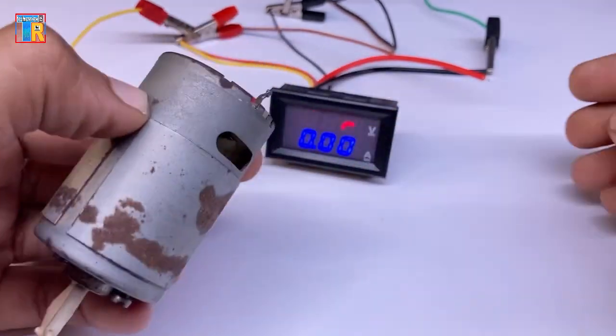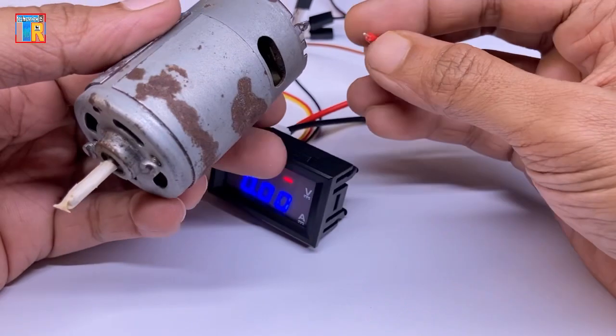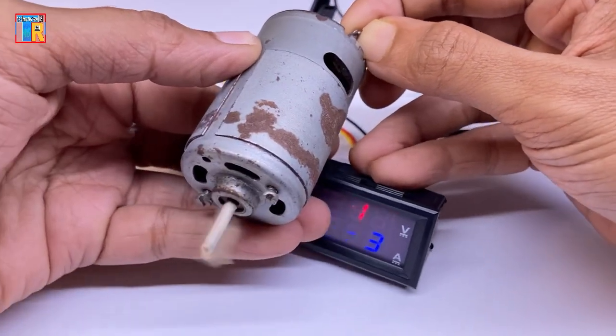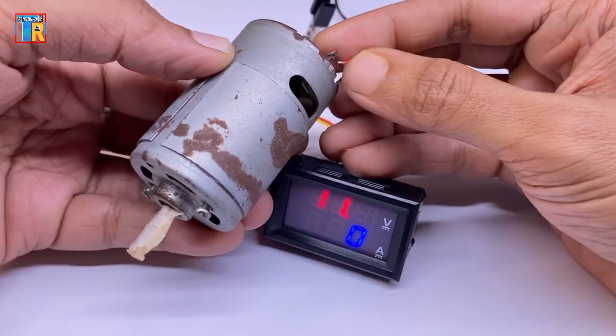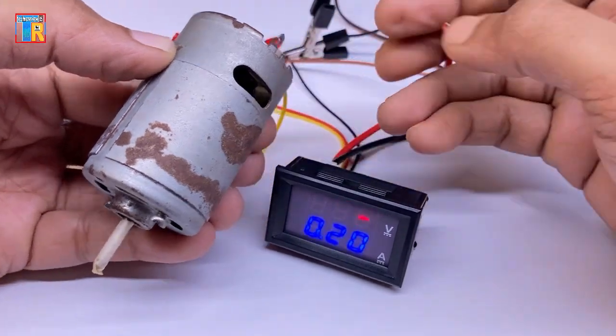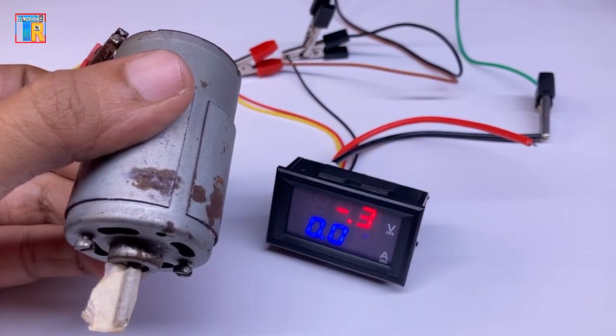Connecting the motor is the same as connecting the LED. Replace the LED with the motor. The meter displays around 0.32 Ampere which is approximately 300mA.